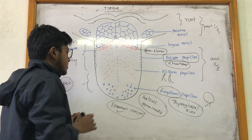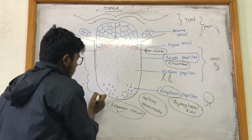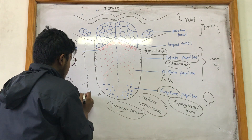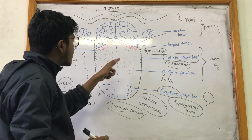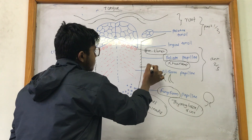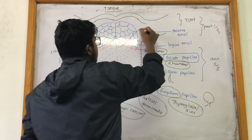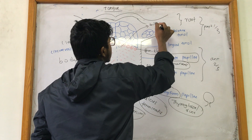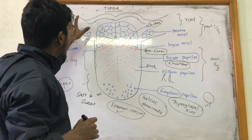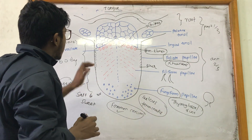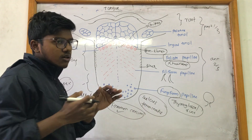Regarding taste sensations: the tip or apex of the tongue detects salty and sweet tastes, the margins detect sour taste, and the posterior part detects bitter taste. These are the four taste sensations located in the various parts of the tongue.